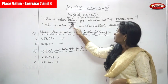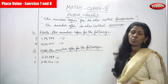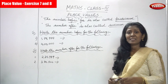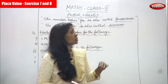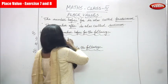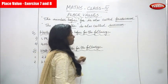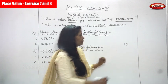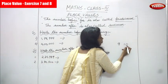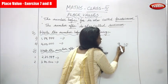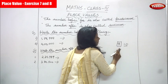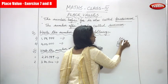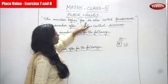Now we are going to see the number before a given number, which is also called the predecessor. First, we must know what is a predecessor. The number before a given number is called its predecessor. For example, take the number 10. What number comes before 10? That is 9. So 9 is the predecessor. It is a very small example I am telling you.